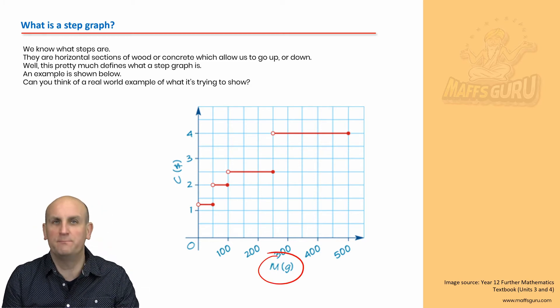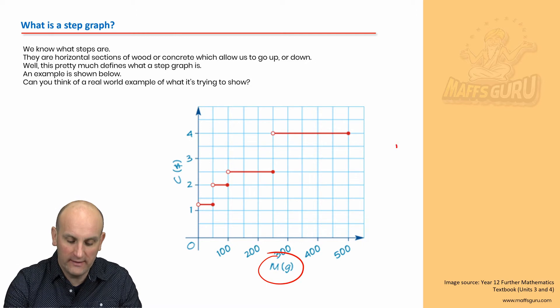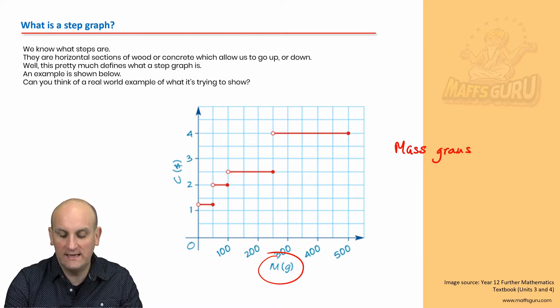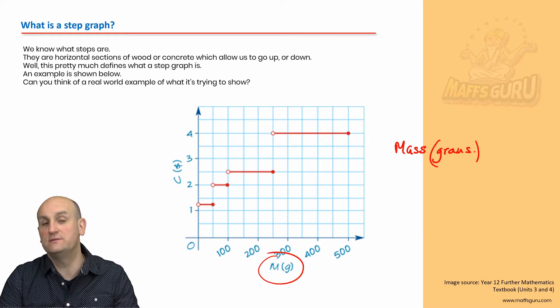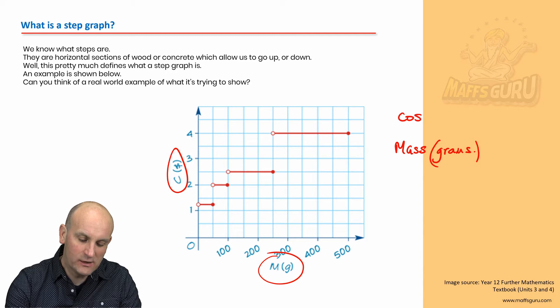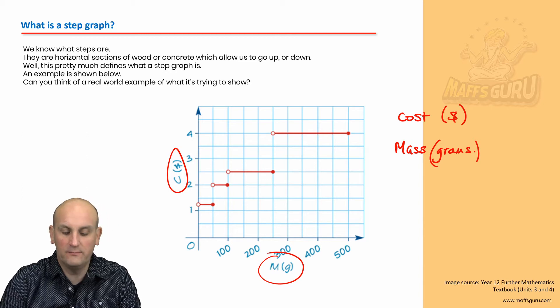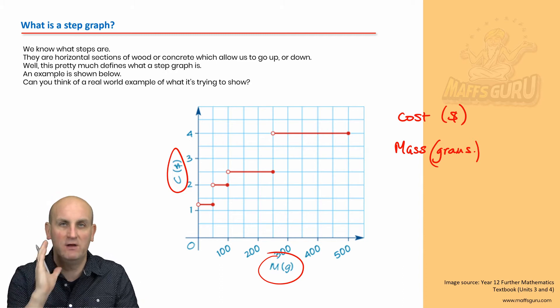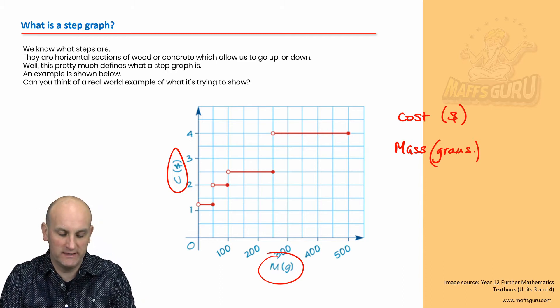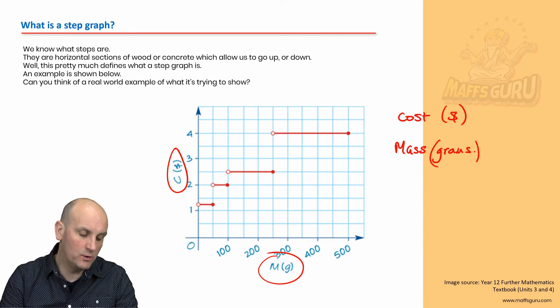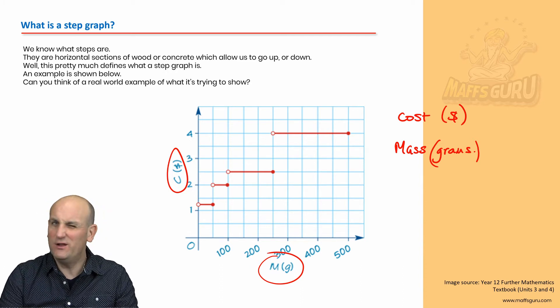So a step graph has horizontal sections that basically stand for something. If we look here, we've got this M with a bracket G. I'm going to tell you now that M stands for mass in grams. So we're obviously weighing something and notice the grams are in brackets, giving us our units. And this C is actually cost and that is a dollar symbol.